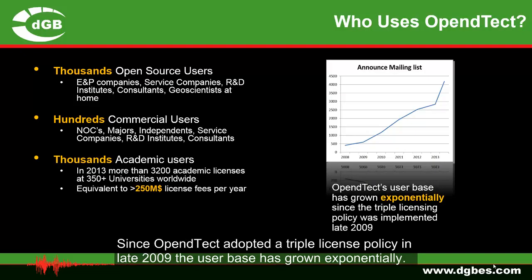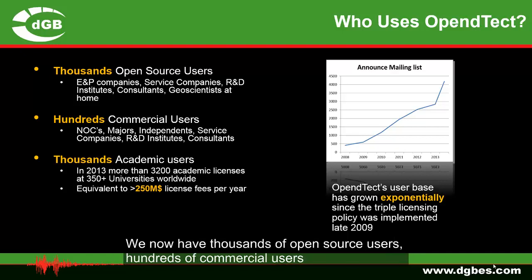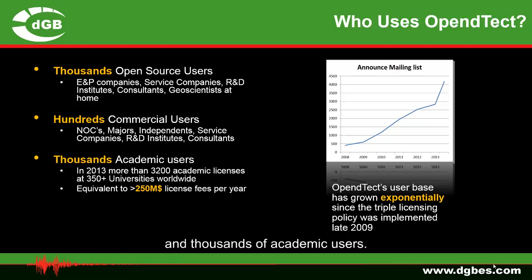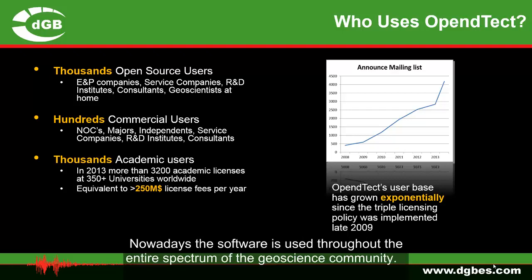Since OpenDetect adopted the triple license policy in late 2009, the user base has grown exponentially. We now have thousands of open source users, hundreds of commercial users, and thousands of academic users. Nowadays the software is used throughout the entire spectrum of the geoscience community.